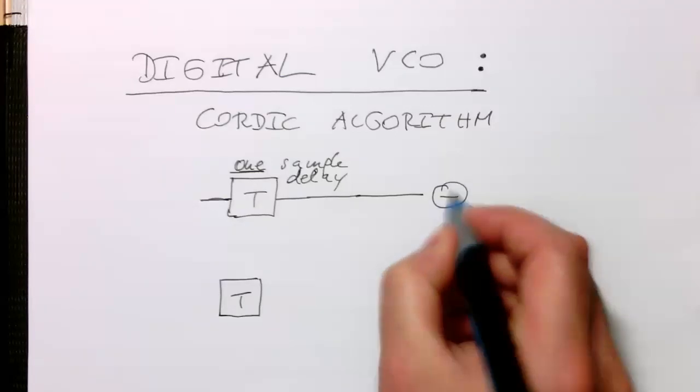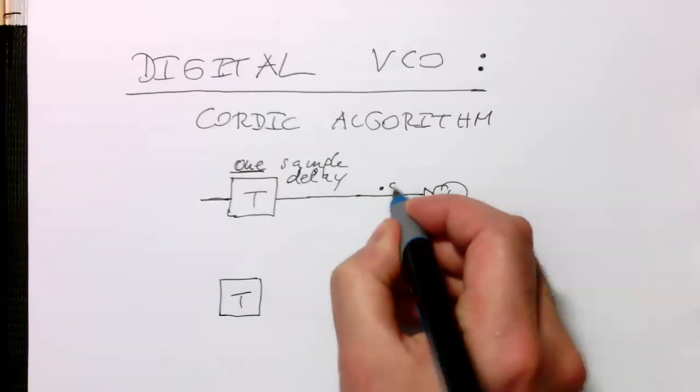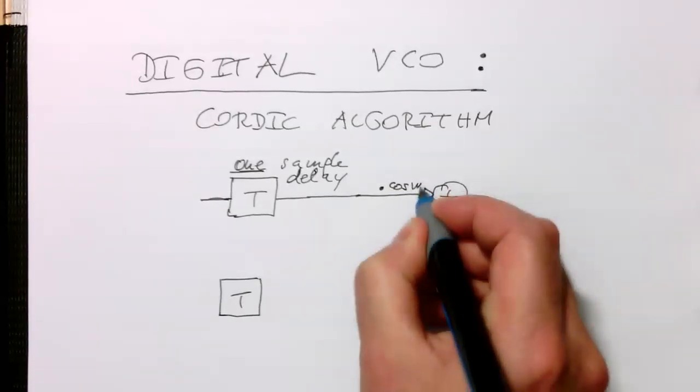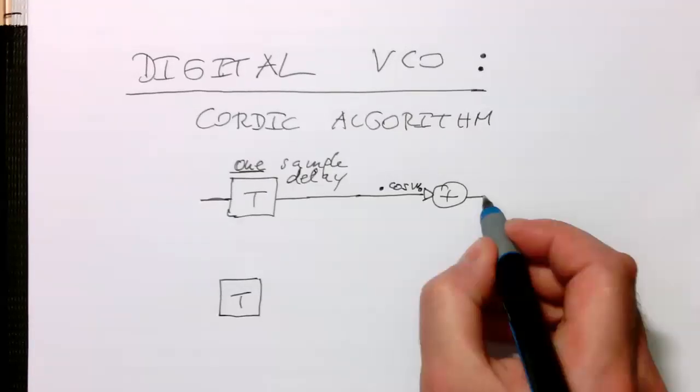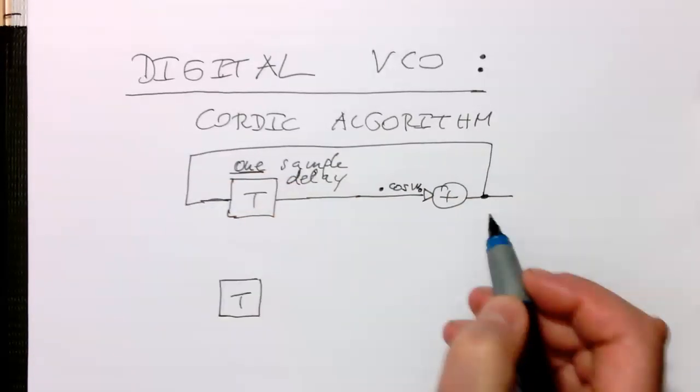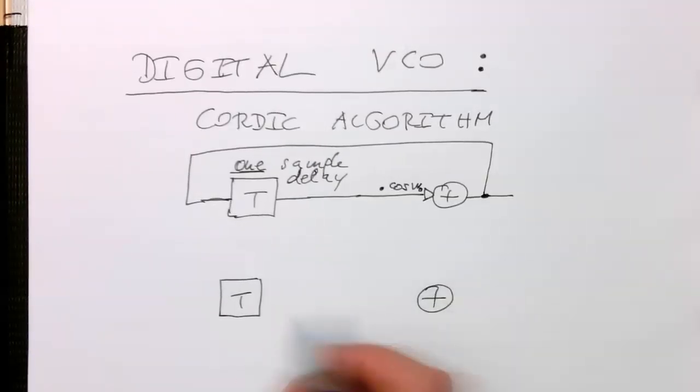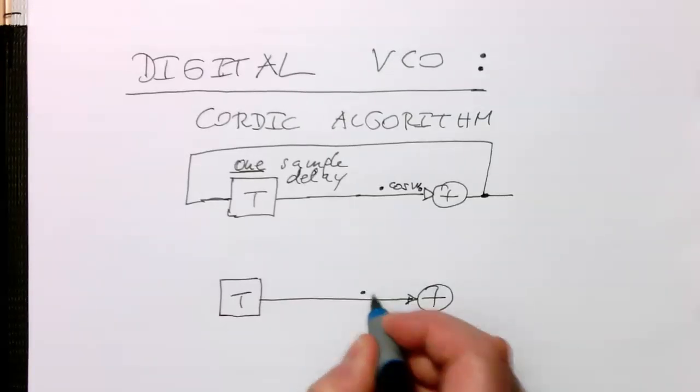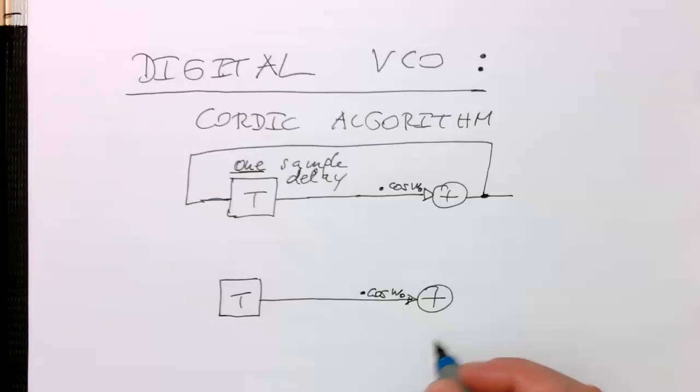And then here at the end, we have a summation unit plus. And so what we do is we multiply this signal here with cosine omega zero. And so we multiply this here. And then we send this here back to this delay step here. And so now we do the same here. Not the same, but something similar. But in this case here, this is also cosine omega zero. And so now we also send this back to our delay.